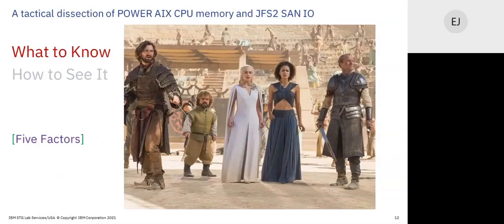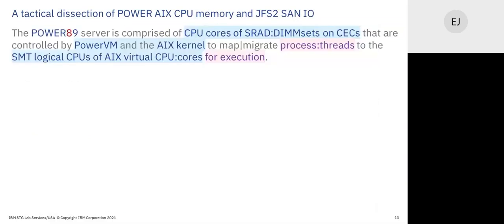Five factors. We all understand that Power servers are comprised of cores on SRAT processor chips directly linked to local DIMM memory. We've got four sets of these SRAT DIMM sets per chip, controlled by PowerVM in the kernel, and the big one: to map and migrate threads to logical CPUs for execution. Knowing how everything works will help you improve performance efficiency.